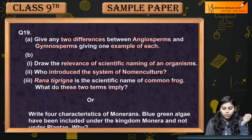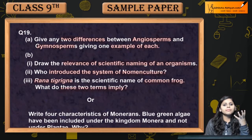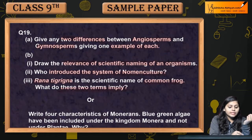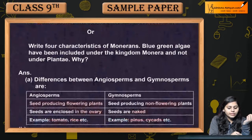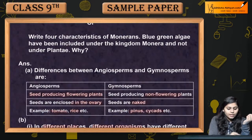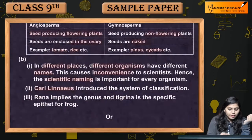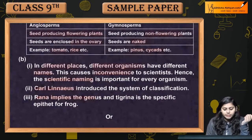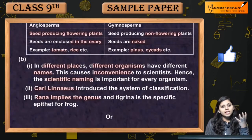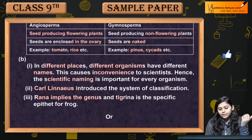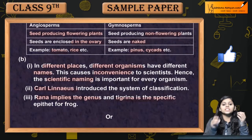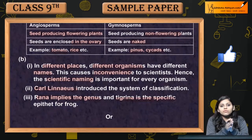What do the two terms Rana and tigrina imply? Rana implies the genus, and tigrina is the specific epithet, referring to the common frog.